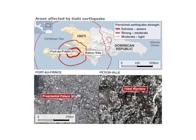This case study is going to look at the impact of a natural hazard and how it can have a major impact on development in poorer countries. The case study we're going to look at is the 2010 Haiti earthquake, which happened on 12th January 2010.